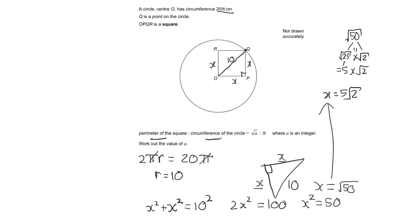Now that we have the side length, we can label all four sides of the square as 5√2 and find the perimeter. All we do is add up all the lengths, which means multiplying the side length by 4. So 5√2 times 4 gives the perimeter equal to 20√2.